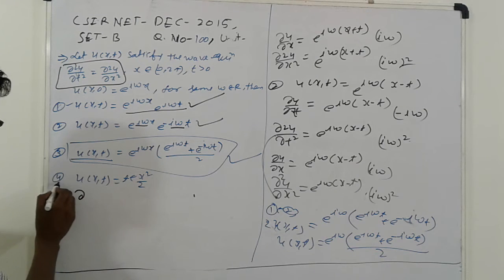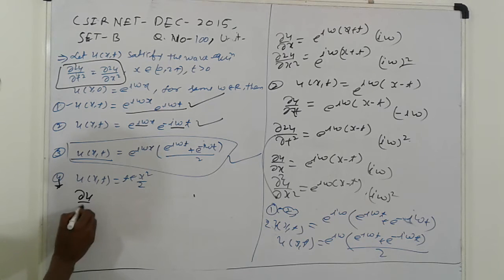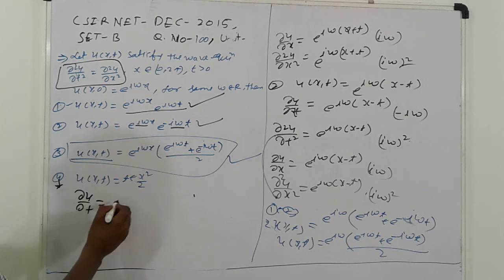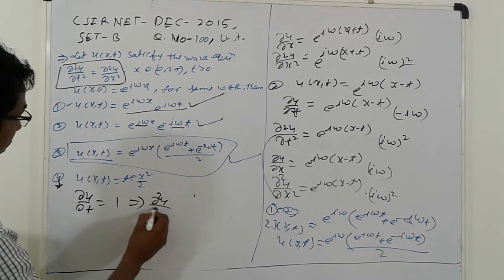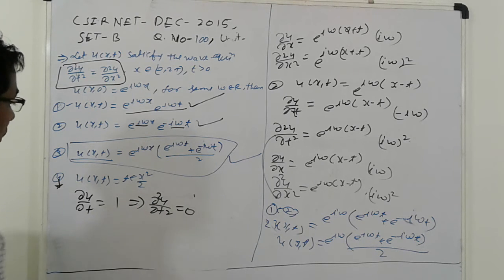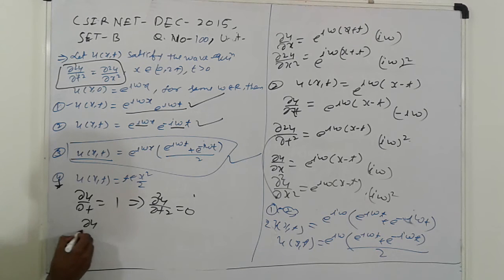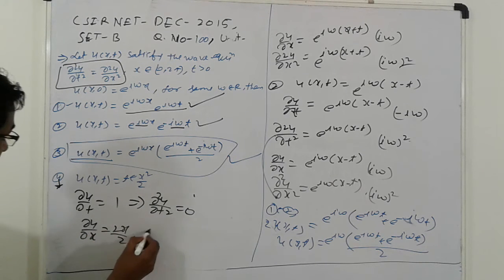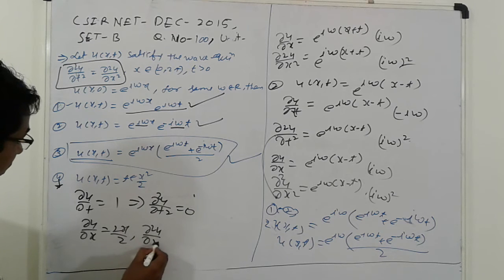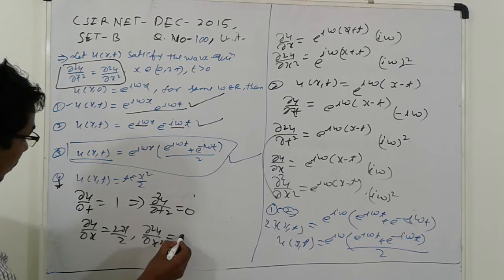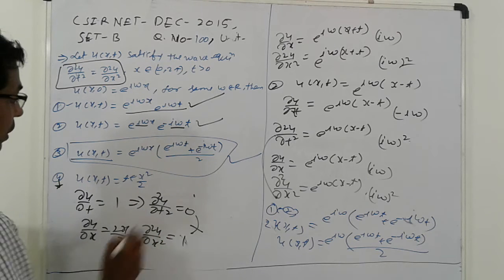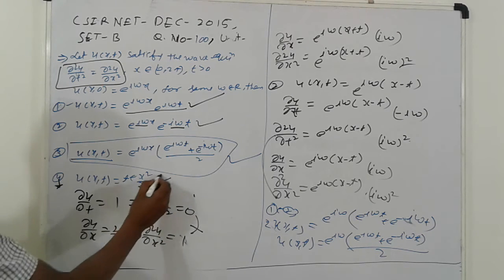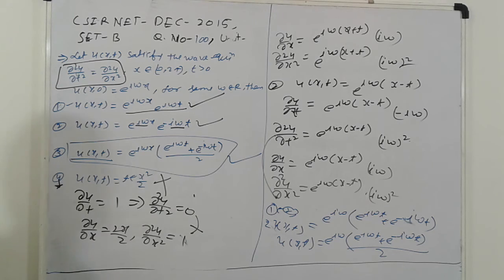For the fourth option: ∂u/∂t gives 1, ∂²u/∂t² gives 0. Then ∂u/∂x gives 2x/2, and ∂²u/∂x² equals 1. Since ∂²u/∂t² ≠ ∂²u/∂x², the fourth option is wrong.